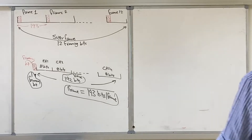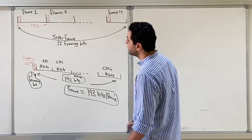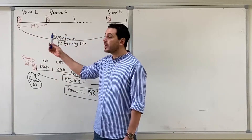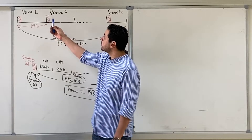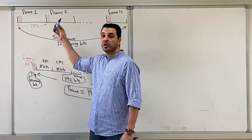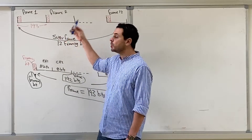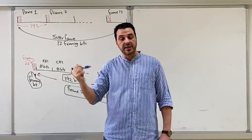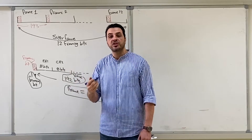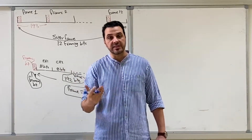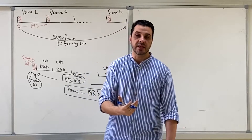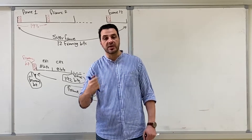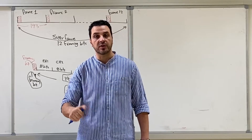In the previous video, we talked about framing bits and their benefit in allowing the receiver to identify the beginning of each frame and the order of frames — so the receiver can identify which frame is frame number one, two, three, or twelve. Now we are going to talk about another related topic: in addition to voice and framing bits, we need to transmit signaling bits — like the dialing pulses when you dial a number, and the on-hook and off-hook signals for telephony.